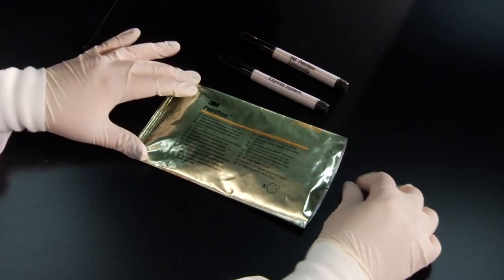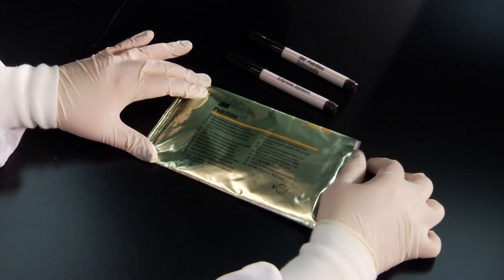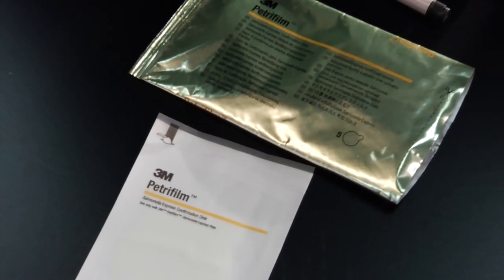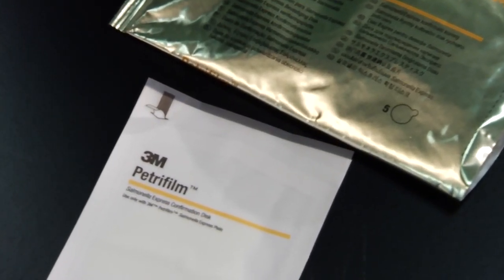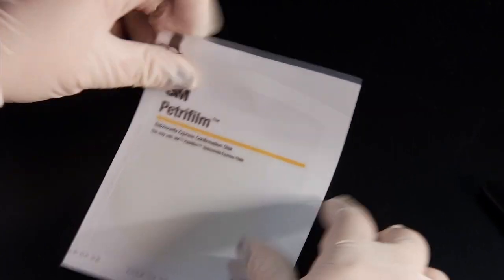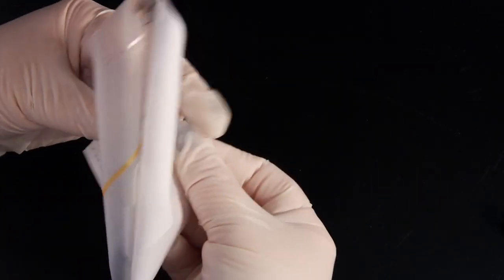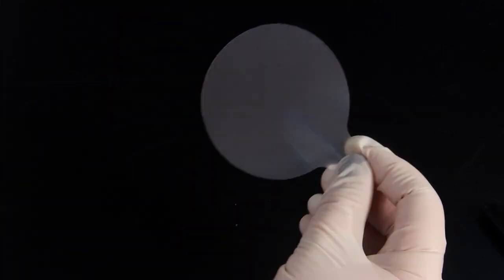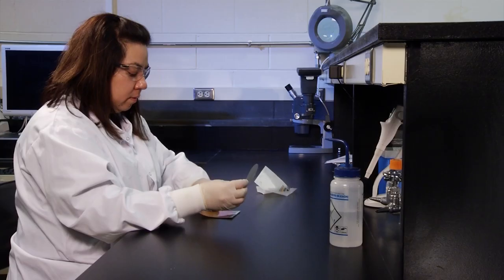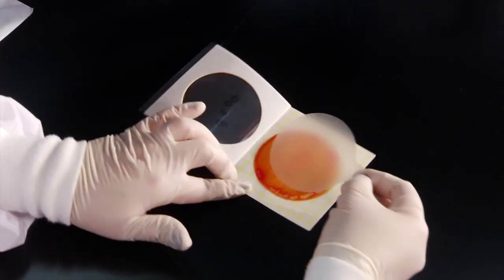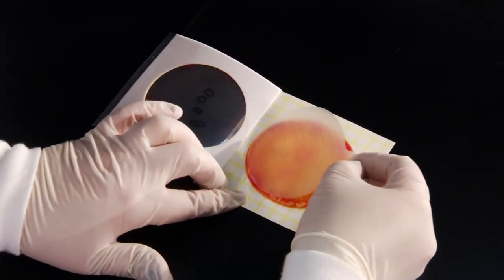To begin biochemical confirmation, remove an individually packaged 3M PetriFilm Salmonella Express Confirmation Disc from its pouch and allow it to come to room temperature. Peel the package to expose the disc's tab. Grasp the tab and remove the disc. Insert the disc by rolling it onto the gel so that you avoid entrapping air bubbles. Then close the plate.